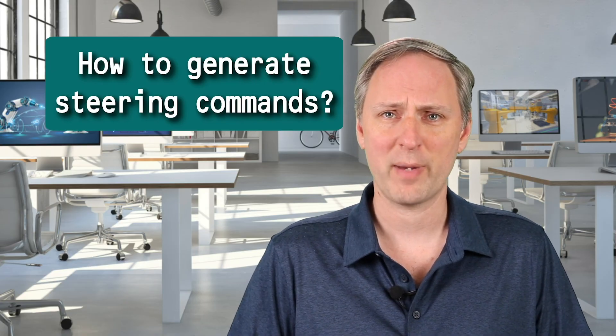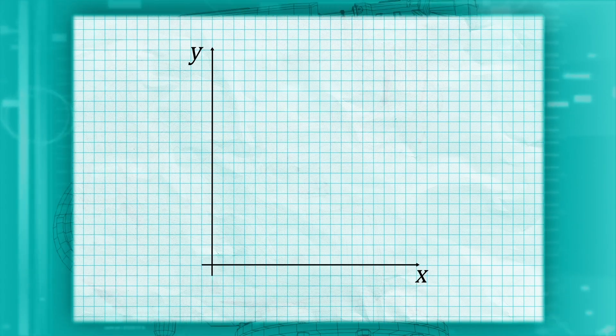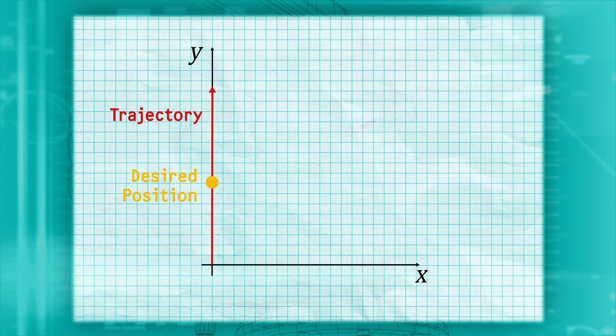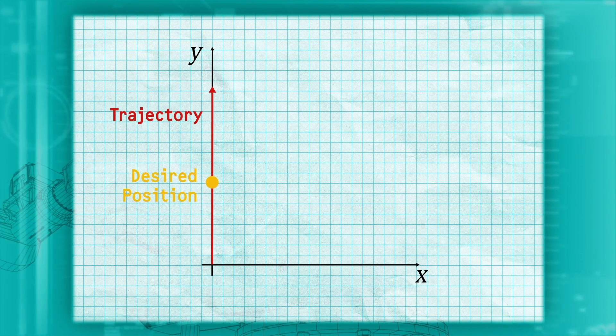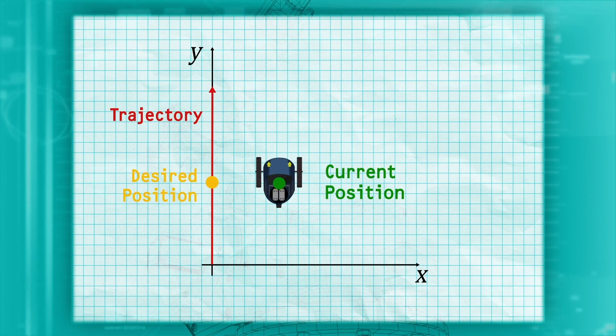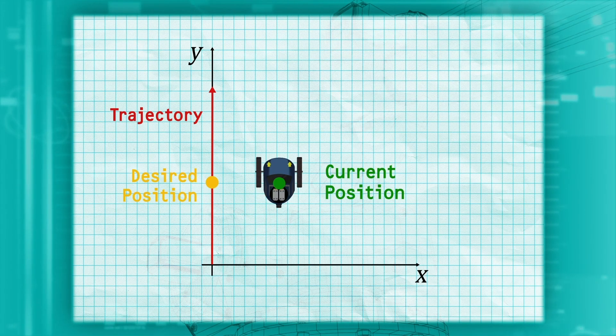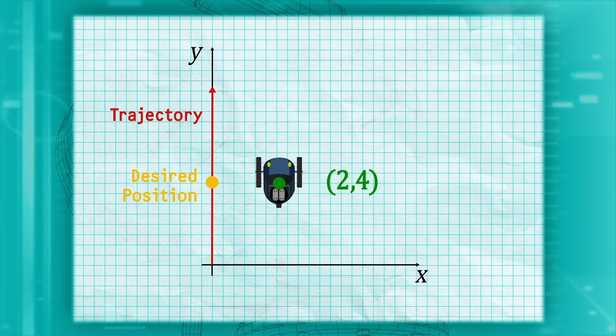Let's think about what information we have to help solve this. We have a desired position from our trajectory. As an example, we'll assume that we want the robot to go up along the positive y-axis. We can also measure our current position using our sensors. For an example, we'll assume the robot is currently at a position of 2-4. Maybe we just swerved around a rock.